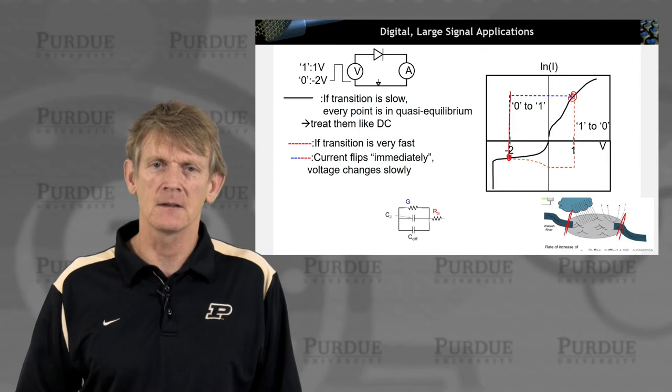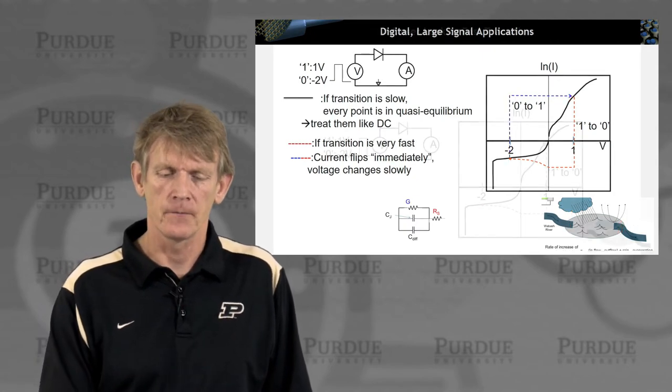So current can flip instantaneously, but the voltage changes slowly.